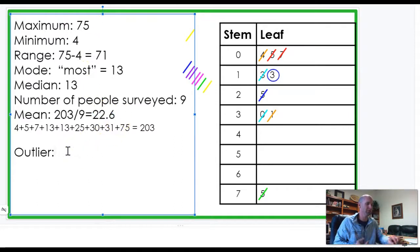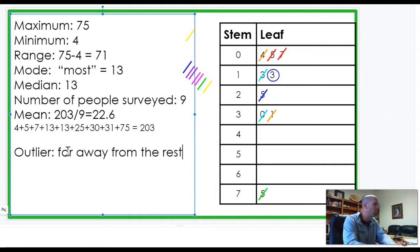So, the last thing we're gonna do is outlier. So, an outlier is a number or piece of data that's far away from the rest. Far away from the rest. That's a simple explanation of it. So, if you look at this data, do you see anything that's far away from the rest? I would say that there's one number that's far away from the rest and it's the biggest number. In fact, it's over twice as big as any of the other numbers. So, I would say that our outlier this time is seventy-five. Here it is seventy-five.